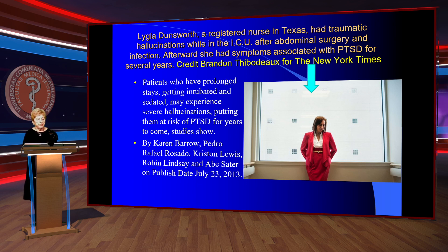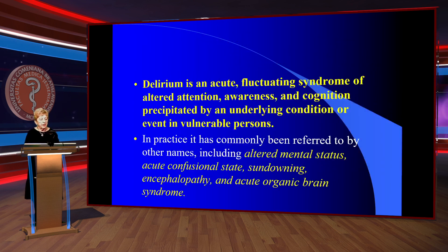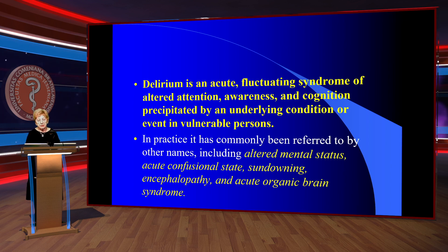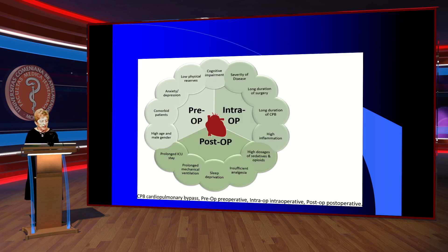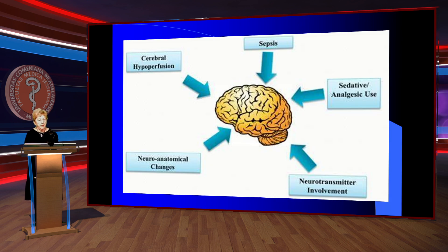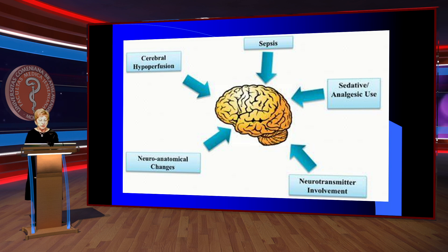This case was covered in the New York Times. Delirium is an acute, fluctuating syndrome of altered attention, awareness, and cognition, precipitated by an underlying condition in a vulnerable person. Pre-operative, intra-operative, and post-operative risk factors are relevant. Brain-related risk factors include hypoperfusion, neuroanatomic changes, neurotransmitter changes, sedative-analgesic drugs, opioids, and benzodiazepines.